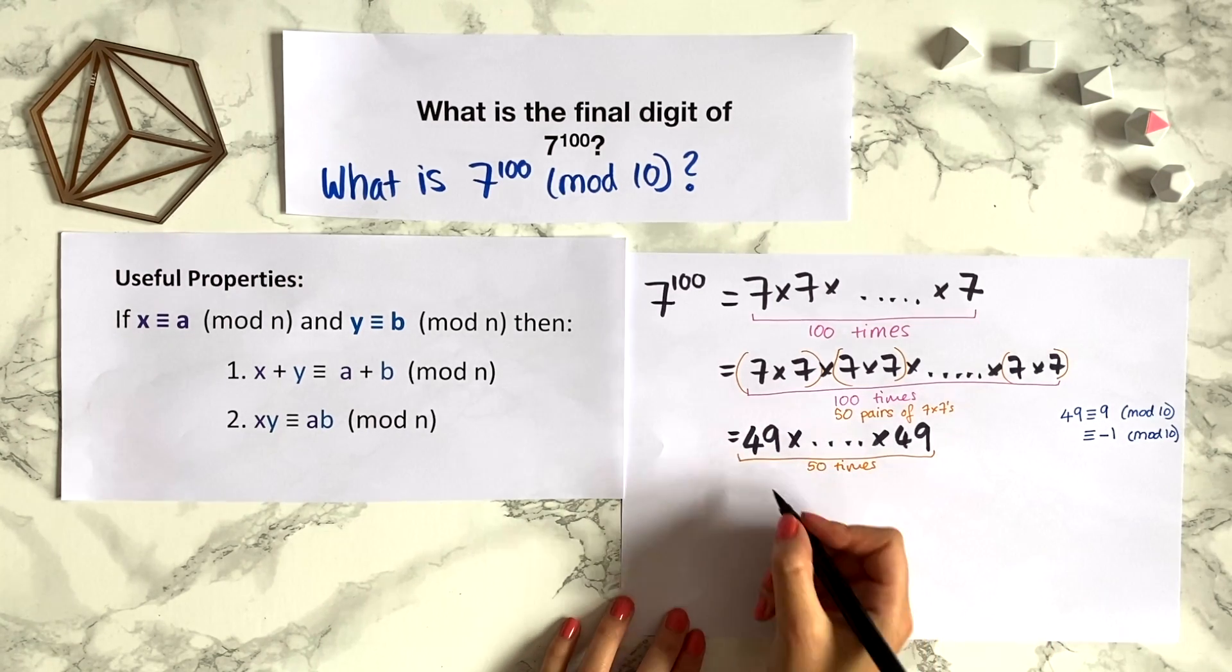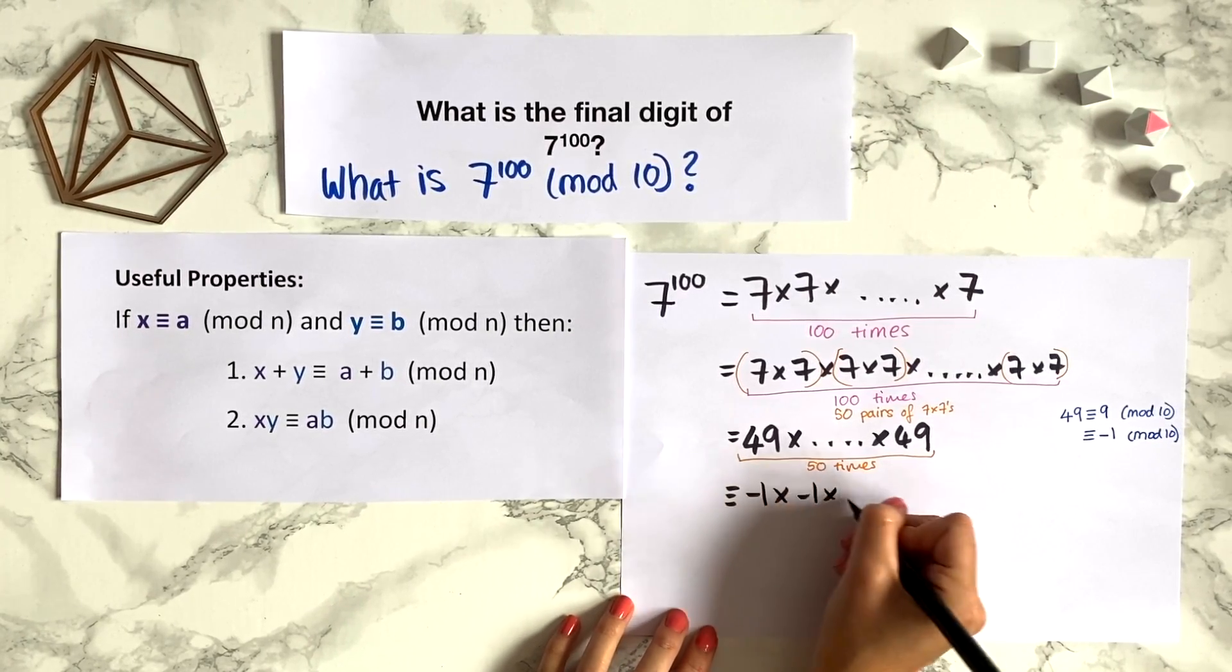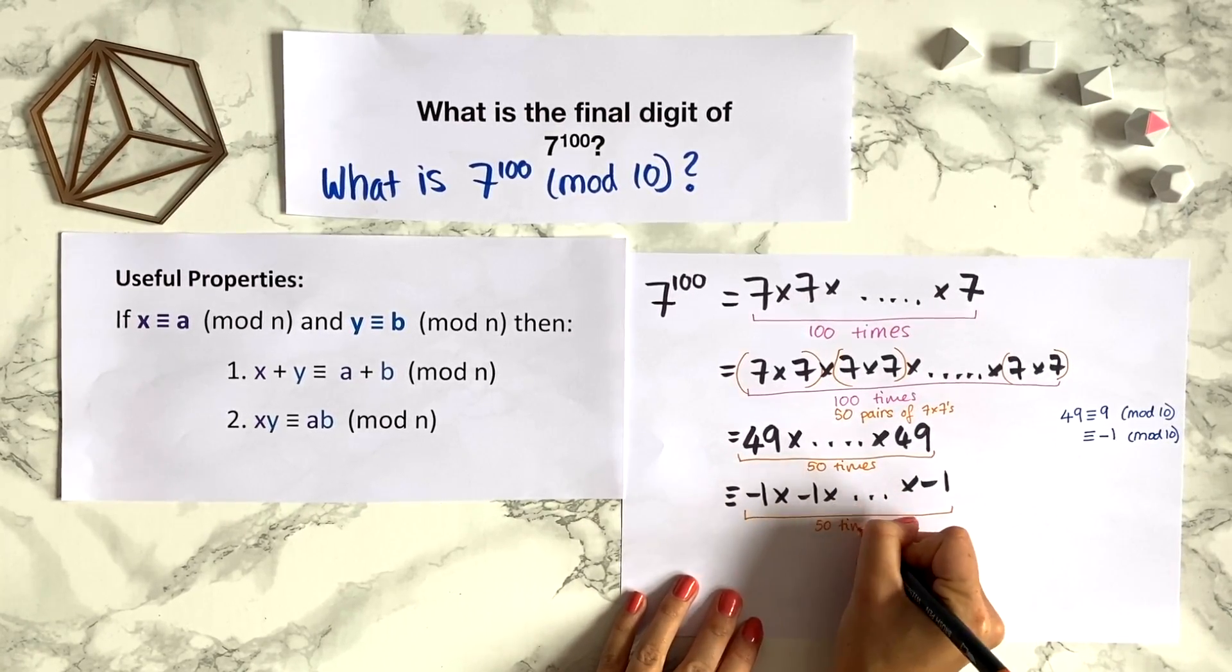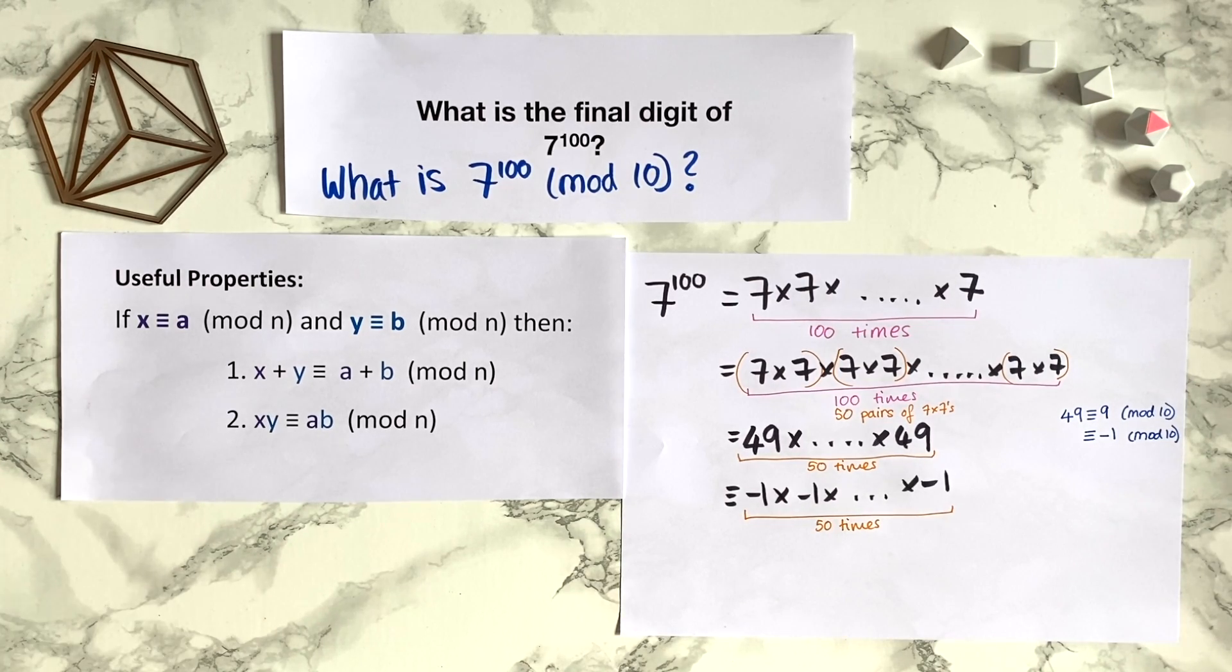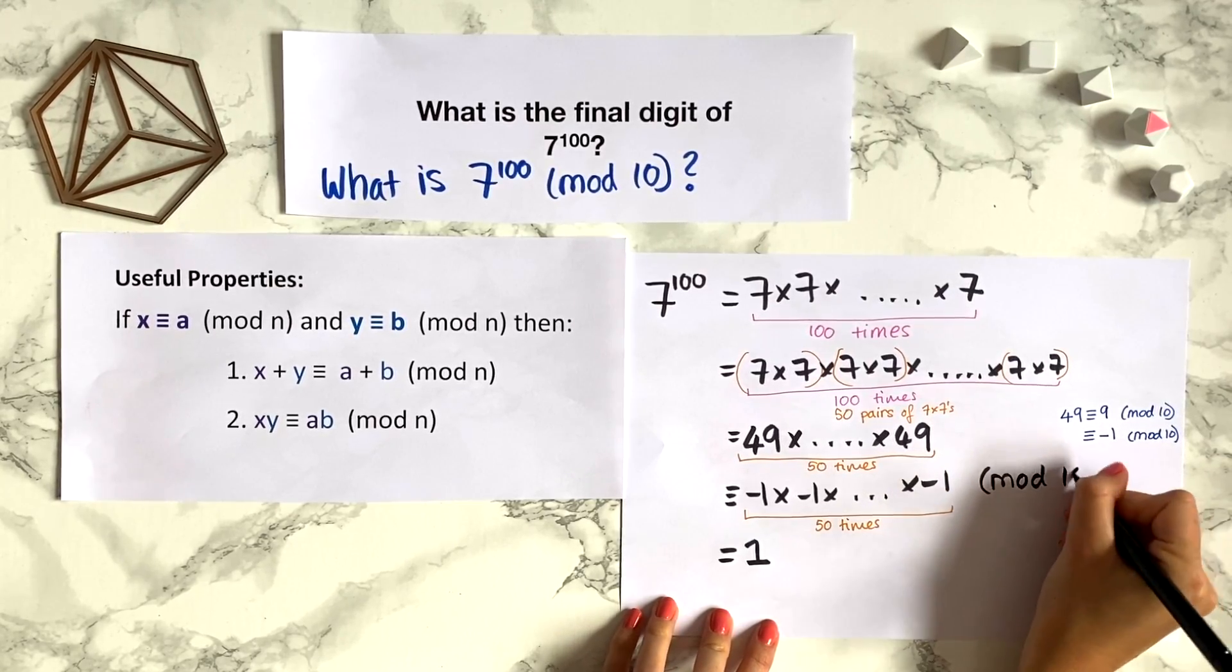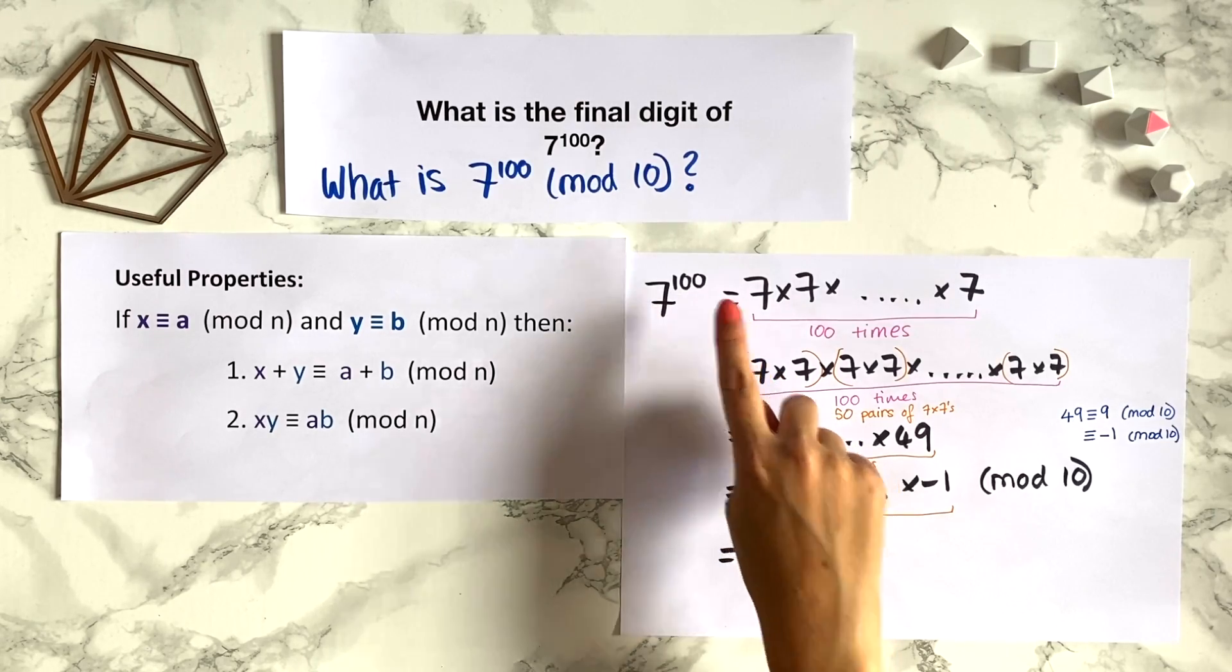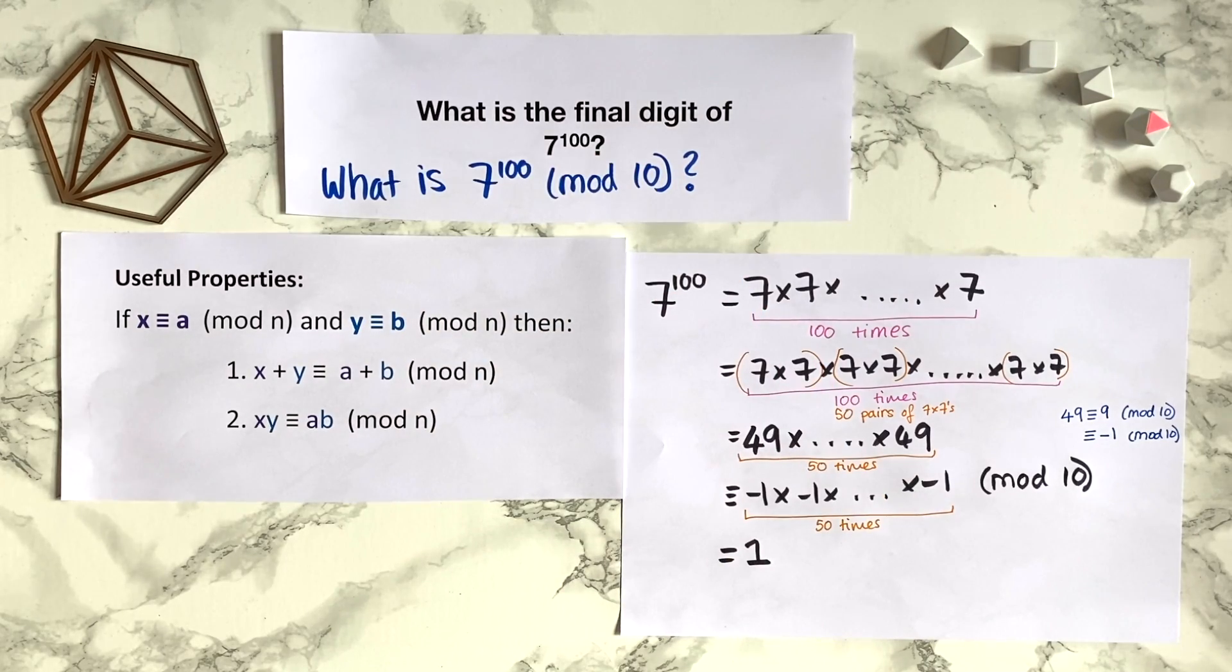So this is actually congruent to minus 1 times minus 1 and so on 50 times. And we know what this is: minus 1 times by itself an even number of times will give us 1. So this equals 1. I should have written mod 10 here. So that's our answer. 7 to the power of 100 modulo 10 is 1. And this means that the final digit of 7 to the power of 100 is 1.